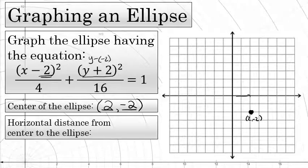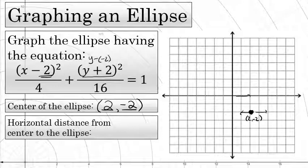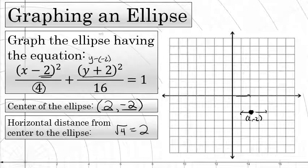Next, let's identify from that center the horizontal distance left and right, the number of units left and right to the edge of the ellipse. And that value comes from the square root of the number below x. The horizontal distance from the center to the edge of the ellipse from the center left and right is the square root of the number below x. In this case, the number below x is 4 and the square root of 4 is 2.